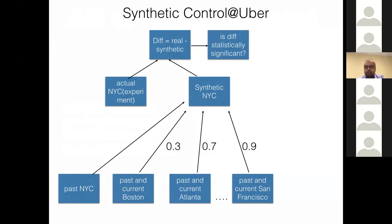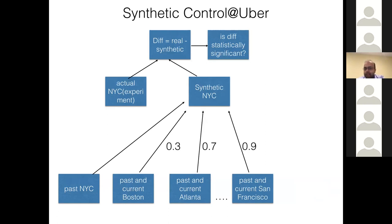So what does synthetic control look like at Uber? We can think of Uber as a collection of cities since we operate in multiple cities. Let's say we want to test something in New York City. Our goal is to build a synthetic New York City. We have the past history of New York City and also over 600 other cities with past and current data. We can take data from cities like Boston and Atlanta, create a synthetic New York with some weights, measure the difference, and ask if that difference is statistically significant.